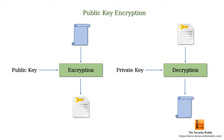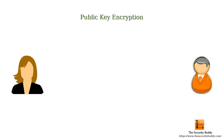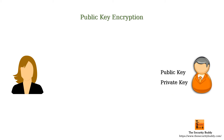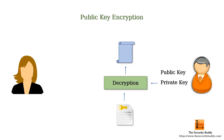So if Alice wants to share an encrypted message with Bob, she can do so easily using public key encryption. Firstly, Bob needs to share his public key with Alice. Now Alice can encrypt the message using Bob's public key and send it across. Bob can decrypt the message using his private key. As only Bob possesses the corresponding private key, no one else other than Bob can decrypt and read the message.